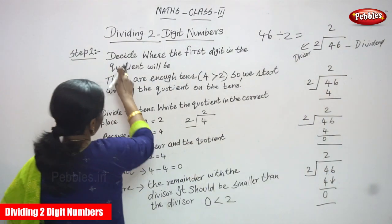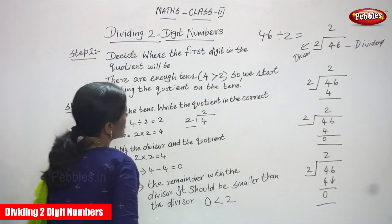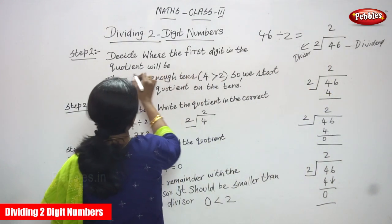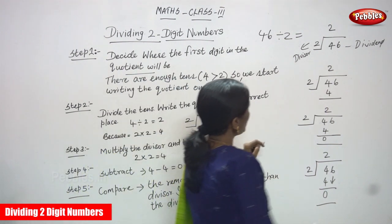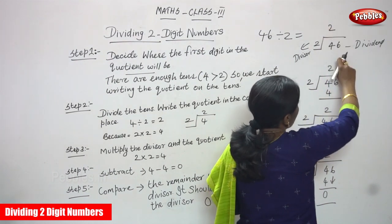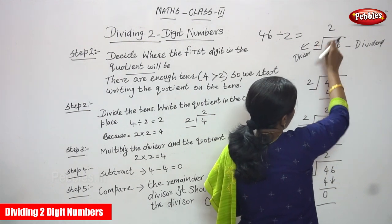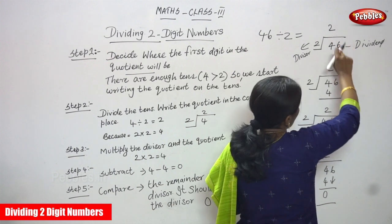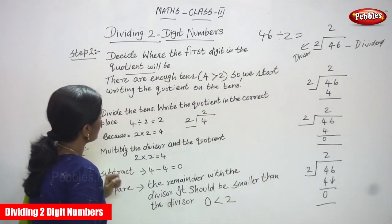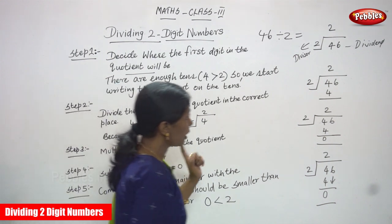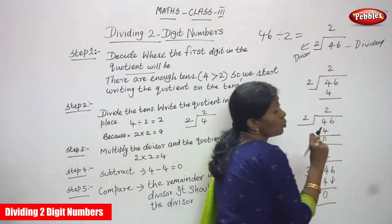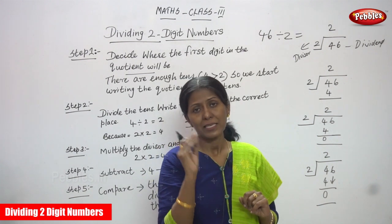So what is the first step? Decide where the first digit in the quotient will be. The quotient will be in this particular place. You have to decide where you are going to write the quotient — on top of the division. So you have to decide where the first digit of the quotient will be written. There are enough tens — see, you have to compare.